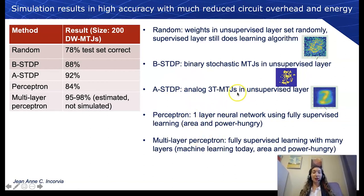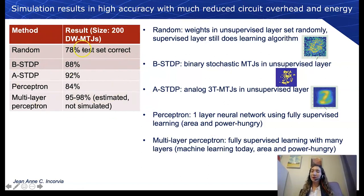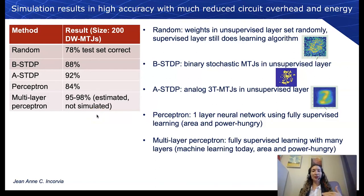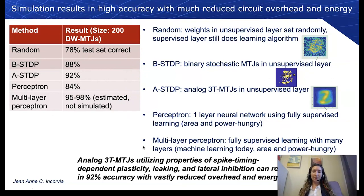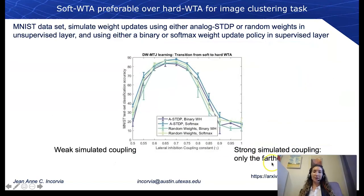We also compared to a perceptron — a one-layer neural network with fully supervised learning — and a multi-layer perceptron, which is fully supervised learning with many layers, representing what machine learning does today. Our results show that the random dataset achieves 78% accuracy, while we can get up to 92% correct with analog STDP, compared to the perceptron at 84%. A multi-layer perceptron can reach 95–98%, but we sacrifice a little accuracy to avoid the very area- and power-hungry multi-layer approach.